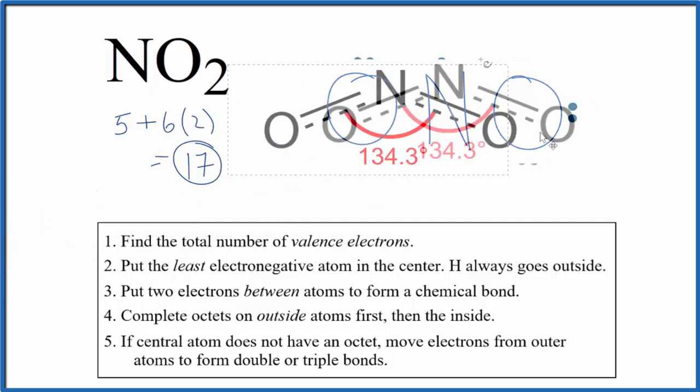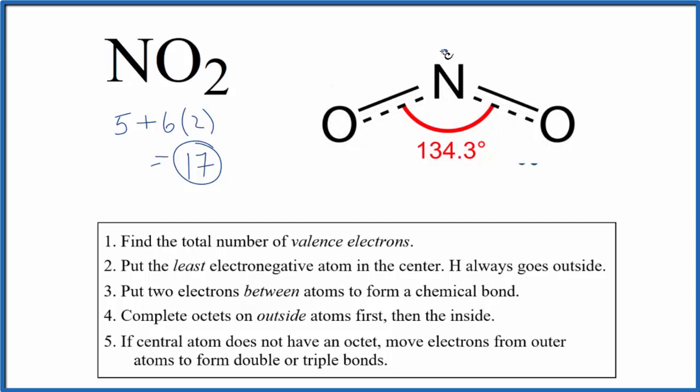It looks sort of like this. And remember, we have our one lone pair here on the nitrogen. And in oxygens, they have lone pairs as well. And we end up having a bent molecular geometry. This lone pair is actually pushing down. So we end up with this bent molecular geometry for NO2.